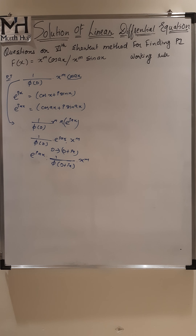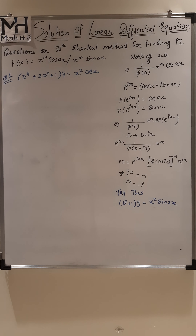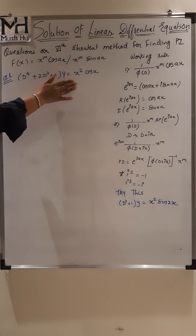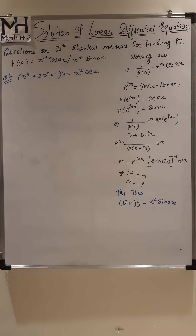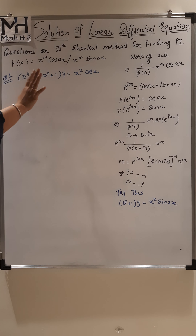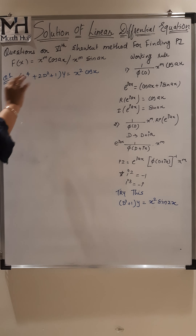Now we solve a question to make the method clearer. Always look at the right-hand side function and understand which shortcut rule to apply. There are two functions of x — three combination shortcut methods are available. One has fixed e^(ax), which is not present here. Another has fixed x^m with cos or sin — that is present. Third has x^1 compulsorily, which is not here. So clearly we know which shortcut method to apply.